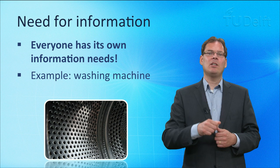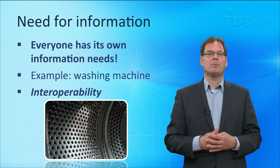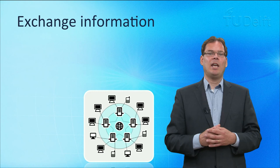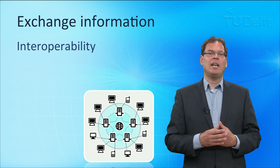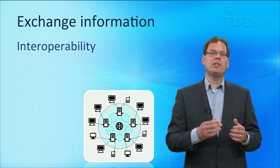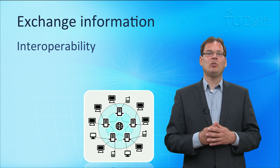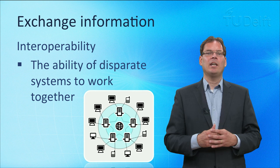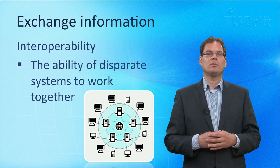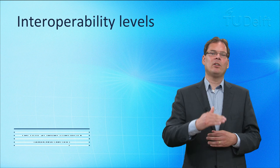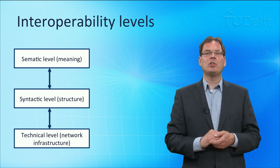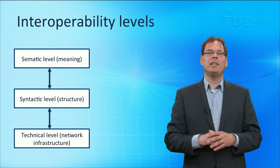Sharing information demands interoperability. There are many challenges for exchanging information. The Institute of Electrical and Electronics Engineers defines interoperability as the ability of two or more systems or components to exchange information and to use the information that has been exchanged. In short, interoperability is the ability of disparate systems to work together. A common distinction in interoperability is between the technical, syntactic and semantic levels. Making a distinction between layers helps to deal with the complexity, and each layer can be designed independently of the other layers. We will use those layers to show that there are challenges on each of them.